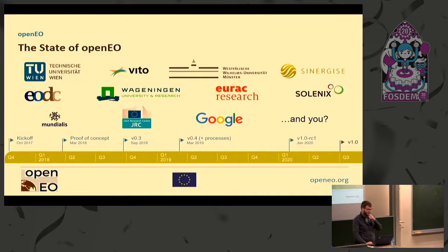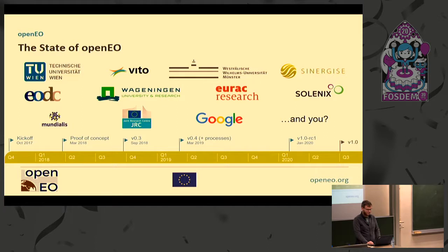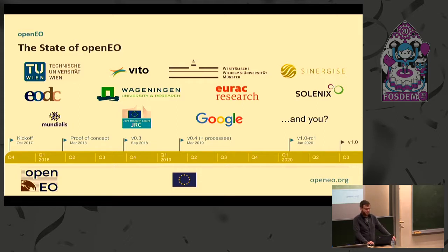The state of OpenEO at the moment is that all these partners are working on it — and maybe you in the future. We have currently released version 1.0 Release Candidate 1. We are pretty much going into stable mode now, after experimenting for a long while — about two years — with what works best and what doesn't. The project ends in the third quarter of the year, so then we can expect a stable version you can really rely on.